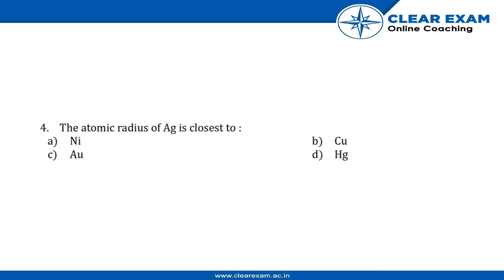The atomic radius of Ag, which is silver, is closest to Au, which is gold. So, C is our answer.